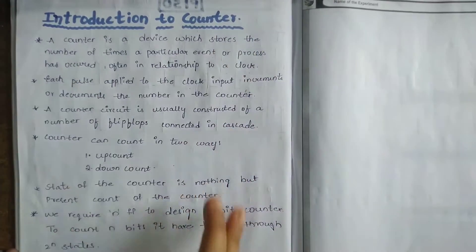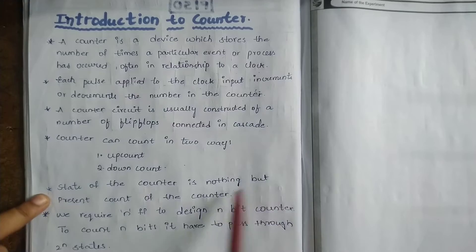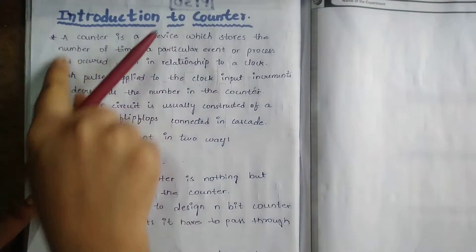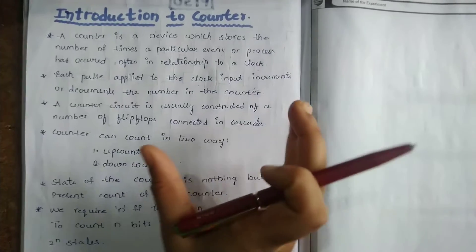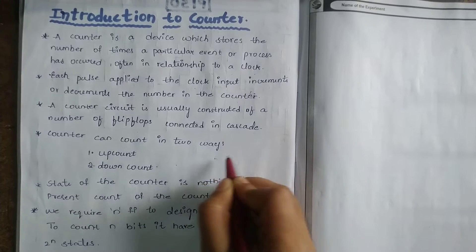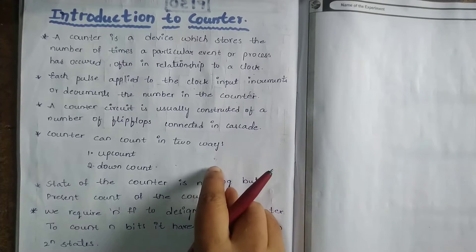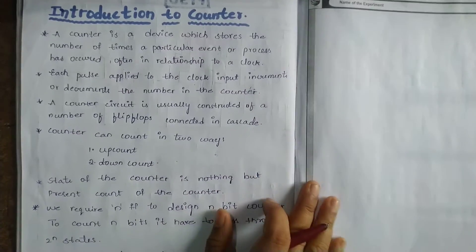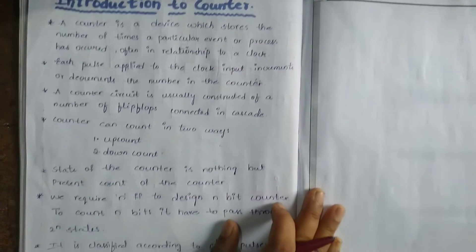For example, consider points 1, 2, 3, 4, 5. The state of my lecture is at the 5th point — that is the present state of my lecture. Similarly, if we count 1 to 10 numbers, and the counter is currently at the 5th number, the state of that counter is 5. If the counter is at 10, the present state of the counter is 10. That is the state of the counter.